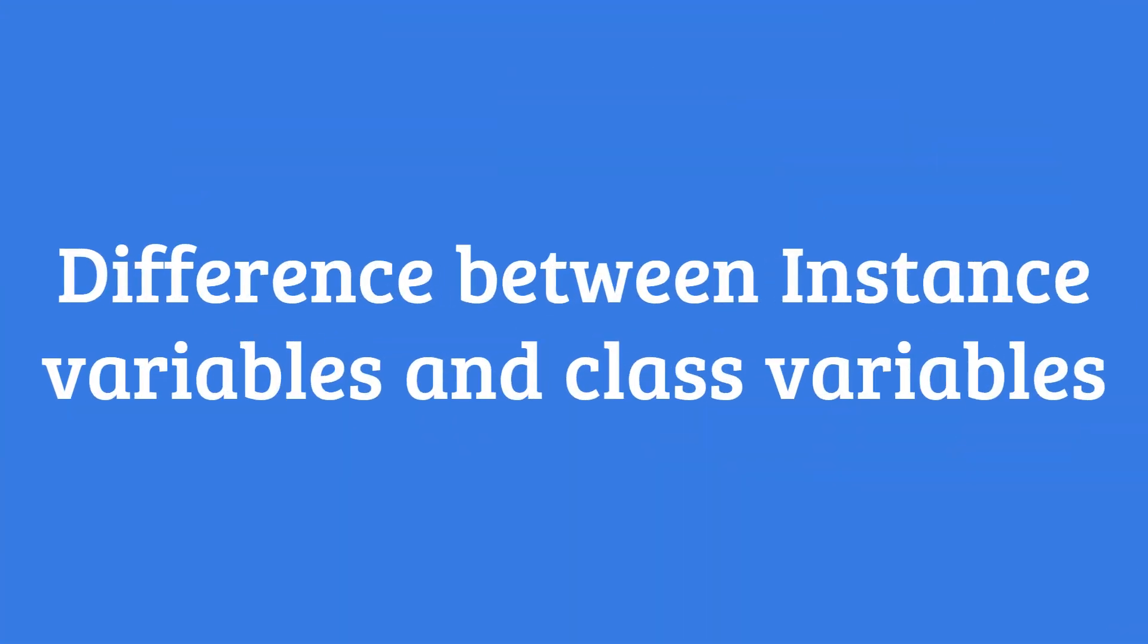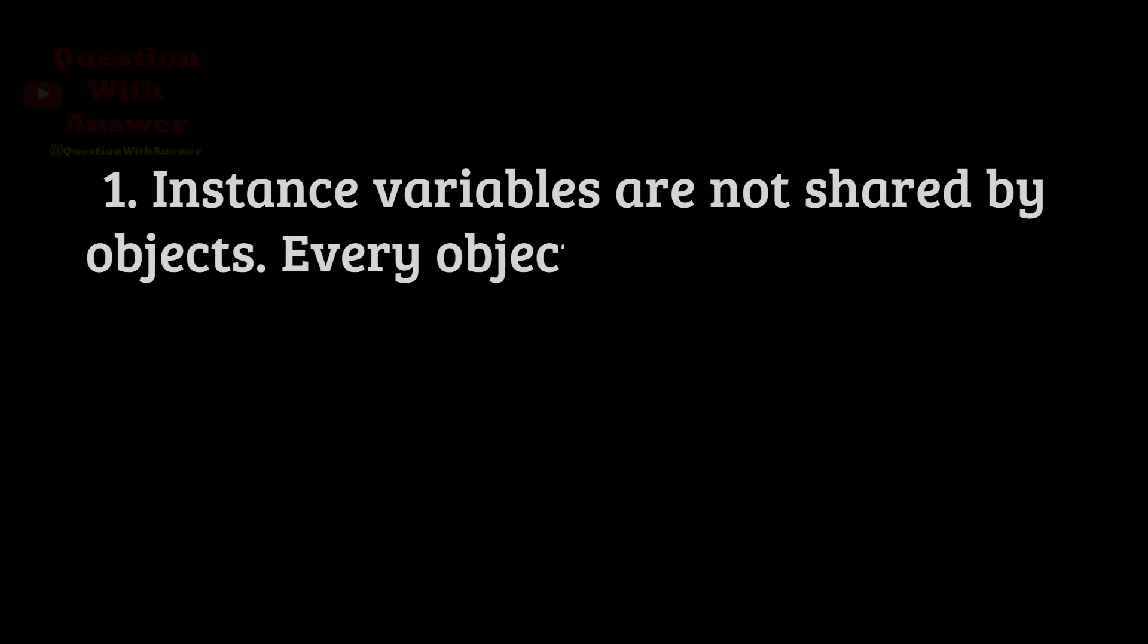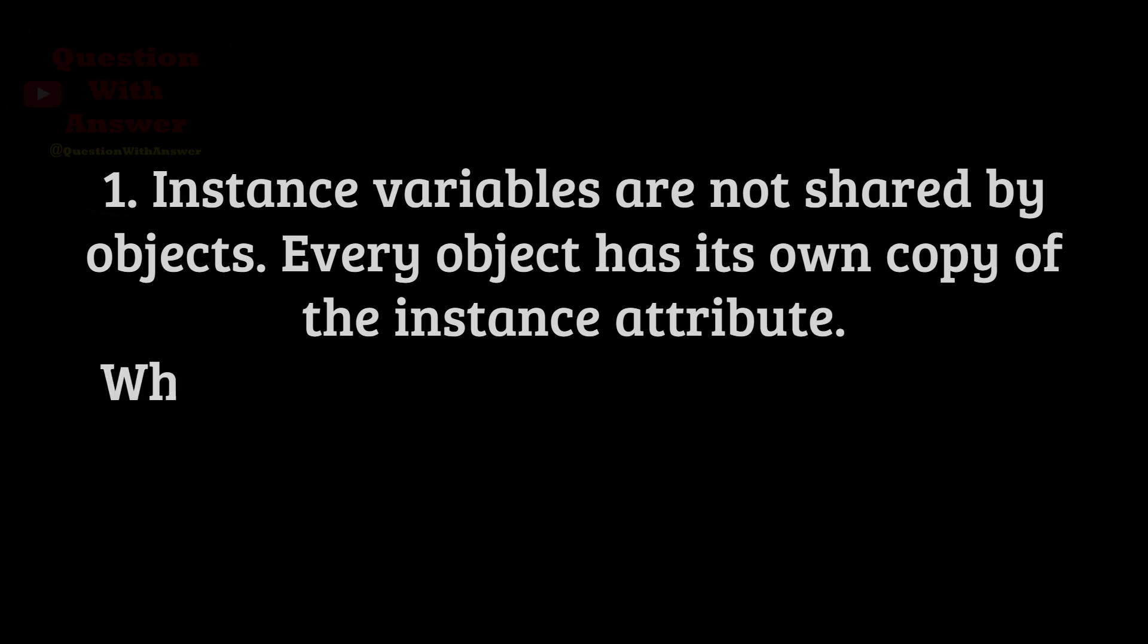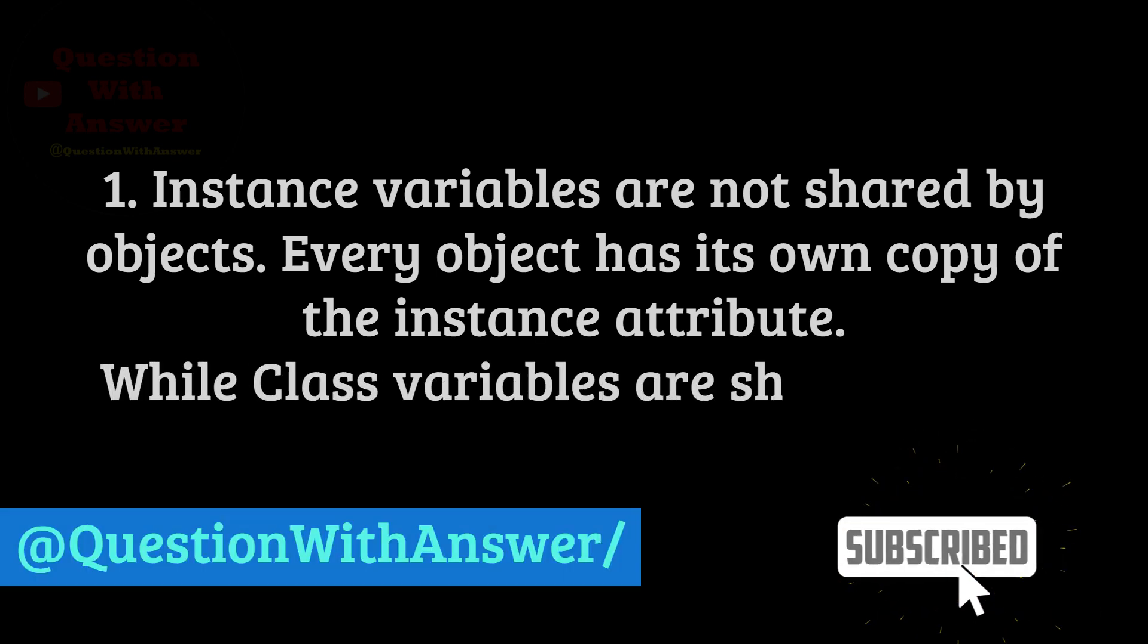Difference between instance variables and class variables. One: Instance variables are not shared by objects. Every object has its own copy of the instance attribute, while class variables are shared by all instances.